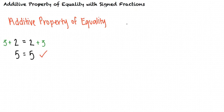That's right. This property is useful when trying to solve for a variable that has a constant being subtracted from it. So for example, to solve for x minus 5 equals 6,